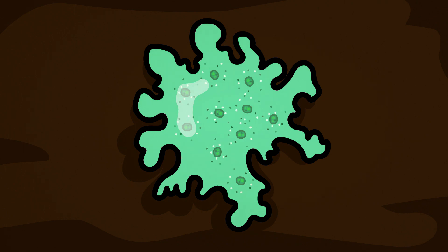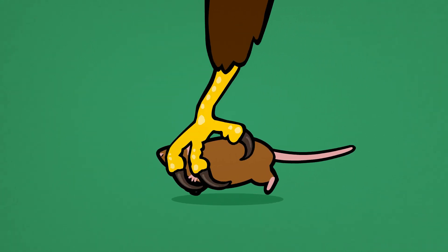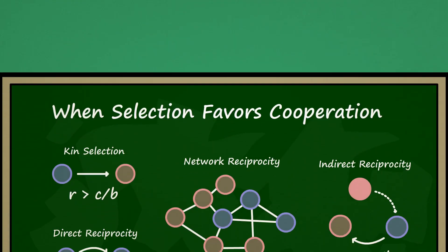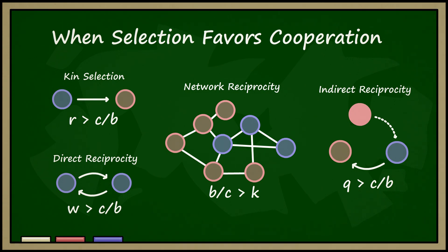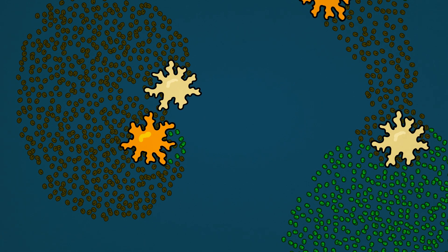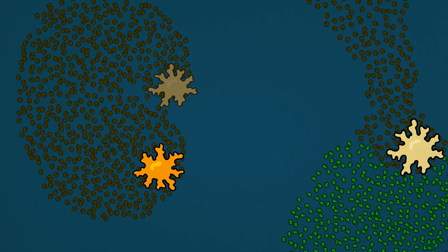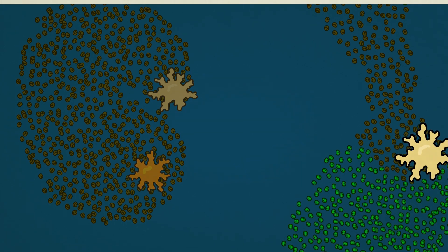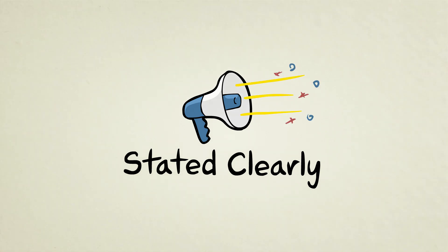So to sum things up, even though natural selection often forces living things into brutal competition, scientists have discovered many situations in which nature favors cooperation, even turning savage parasites into gentle, caring hosts. These relationships develop not because individuals decide to work together, but because circumstances of the environment naturally select for cooperation. I'm John Perry, and that's the evolution of cooperation, Stated Clearly.